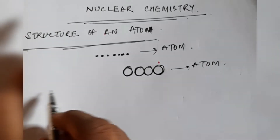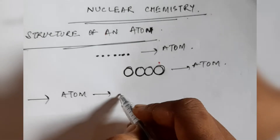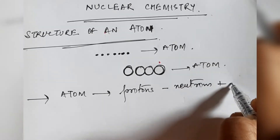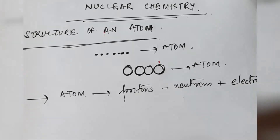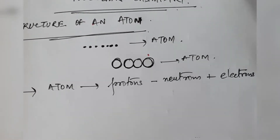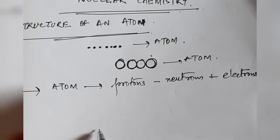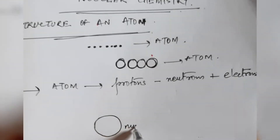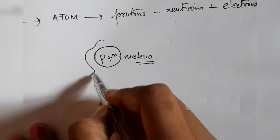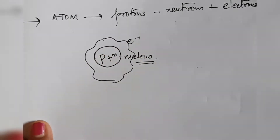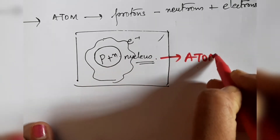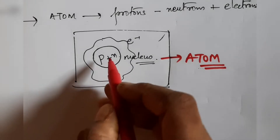Nowadays we know that atoms can be further broken into protons, neutrons, and electrons. This was not known before, but now we understand that atoms can be broken down into these three components. Inside the nucleus there are protons and neutrons, and the electrons revolve around the nucleus. These three parts together constitute an atom.